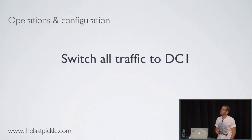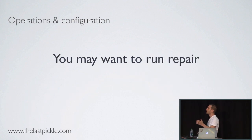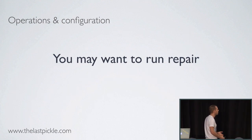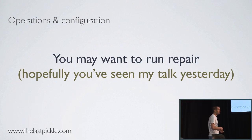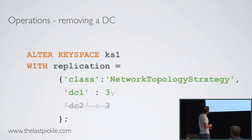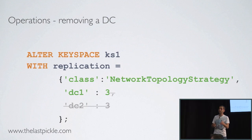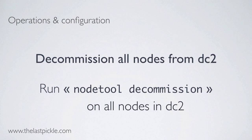So how to remove DC2. First you will have to switch traffic to DC1. You may want to run repair because you might have some data on DC2 that is not on DC1, since we are in an eventually consistent system. Then run an alter keyspace statement to remove replicas on DC2. Finally, run nodetool decommission on each node in DC2 and they'll get removed from the cluster.